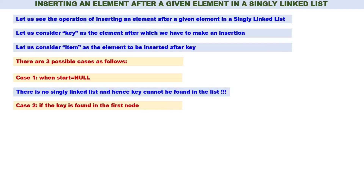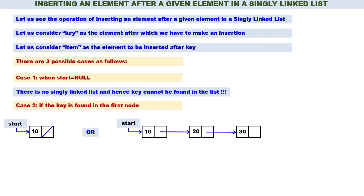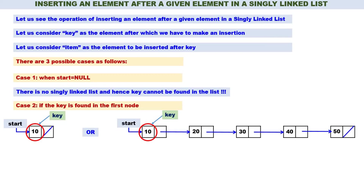Case two: if the key is found in the first node. There are two sub-cases: when the linked list contains only one node and that node contains key, or the linked list contains many nodes and the first node contains key. Case three: if the key is found anywhere after the first node, meaning key is not found in the first node.